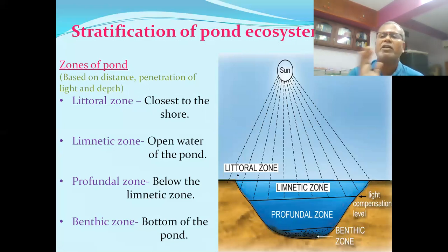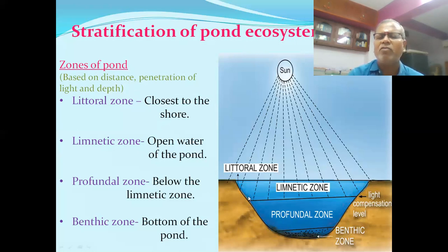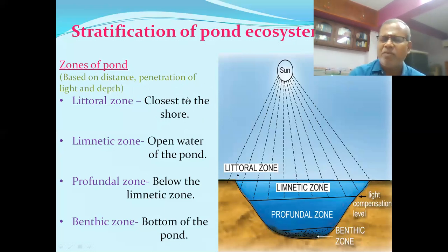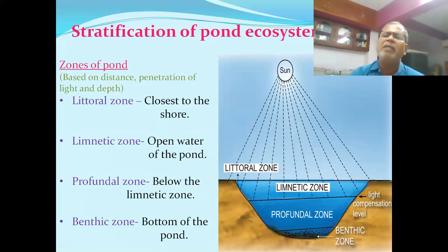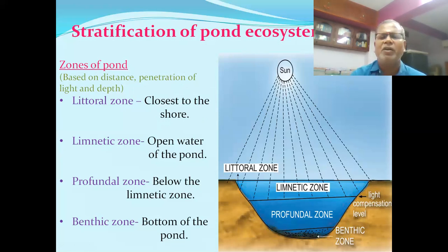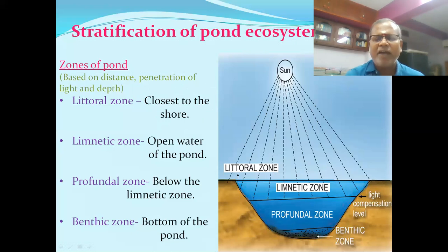The other factors are the distance from the shore and the depth of the pond, and the plants and animals that live there. There are three zones: one is littoral, second is limnetic, third is profundal zone. Finally, a benthic zone where the benthic organisms and decomposers live.